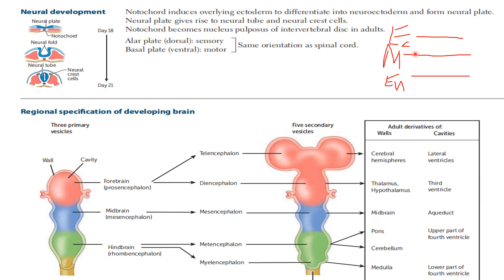From the mesoderm, we are going to have the notochord. The mesoderm is making up the notochord. Now the notochord is actually getting fused or induced into the ectoderm and getting differentiated into the neuroectoderm. We have these three layers — top layer, middle layer — and in the middle layer you can see the notochord, which is getting fused and differentiated into the neuroectoderm.